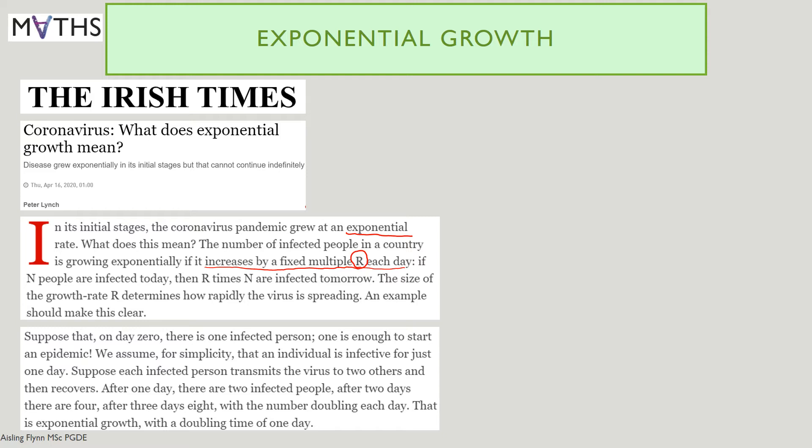Suppose that on day zero, there is one infected person. One is enough to start an epidemic. We assume, for simplicity, that an individual is infected for just one day. Suppose each infected person transmits the virus to two others and then recovers. After one day, there are two infected people. After two days, there will be four. After three days, eight, with the number doubling each day. That is known as exponential growth with a doubling time of one day and an R number R equals two.